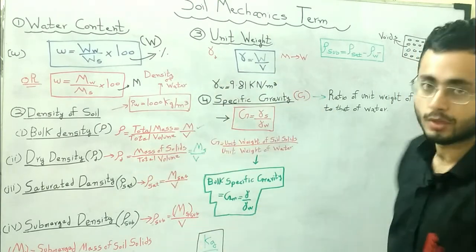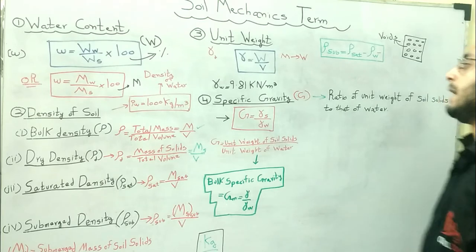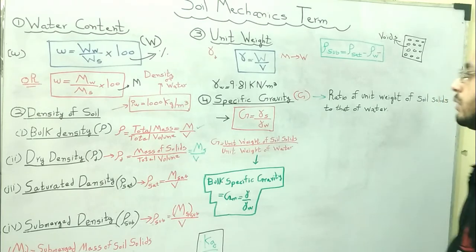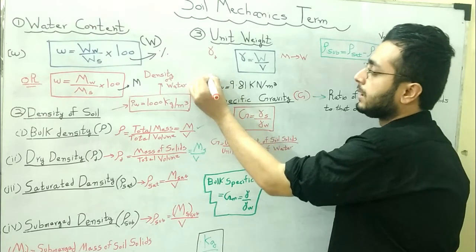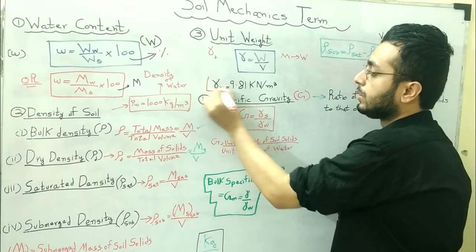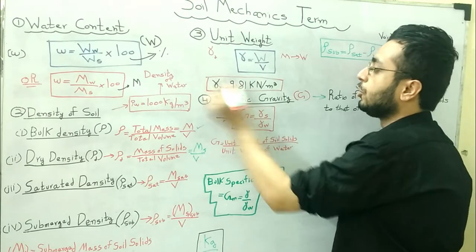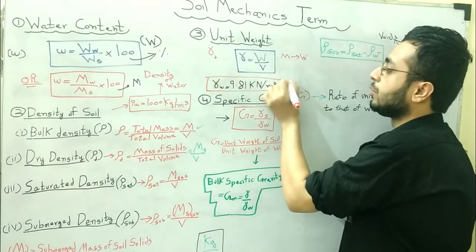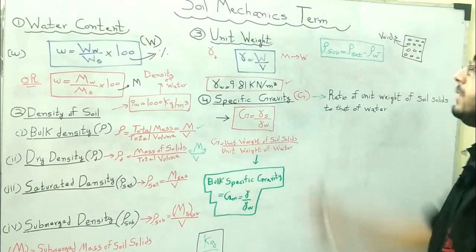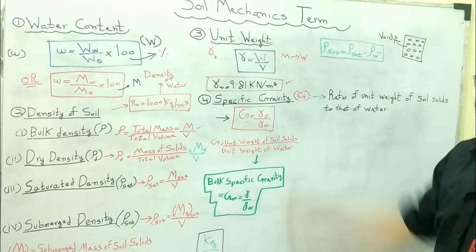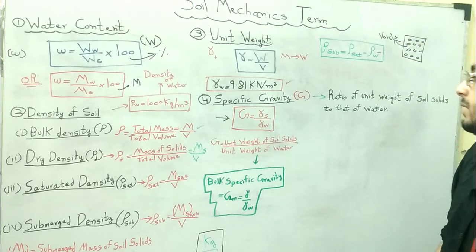The unit weight of water, gamma_w, is equal to 9.81 kilonewton per meter cube. This is an important value to remember.